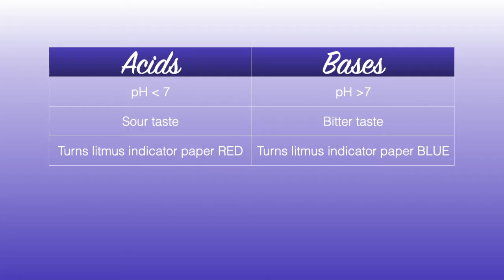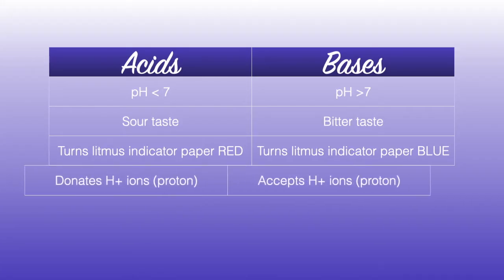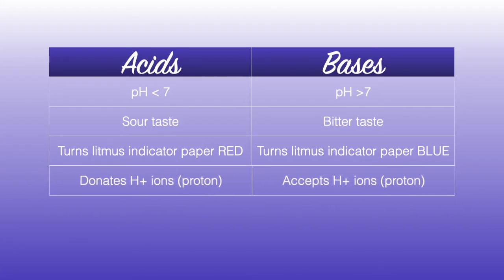Acids turn litmus indicator paper red, whereas bases turn litmus indicator paper blue. Acids like to donate protons, whereas bases accept protons.